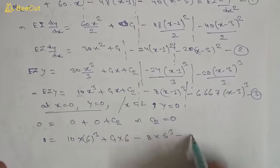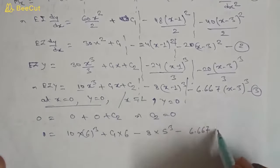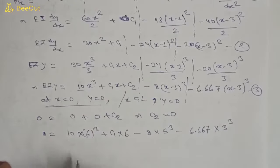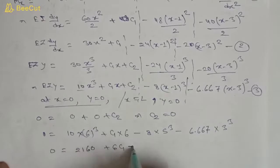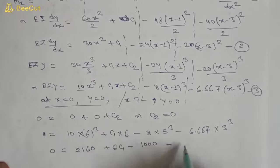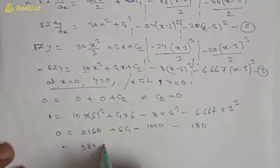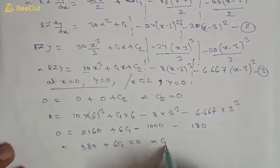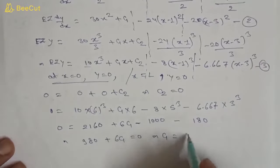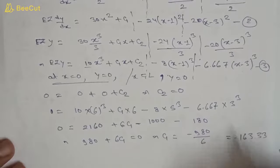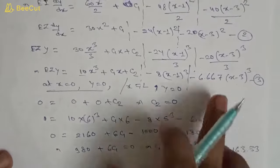Continuing with x = 6: 0 = 2160 + 6·C1 − 8·(5³) − 6.667·(3³), which gives 0 = 2160 + 6·C1 − 1000 − 180. Solving: 980 + 6·C1 = 0, so C1 = −980/6 = −163.33.